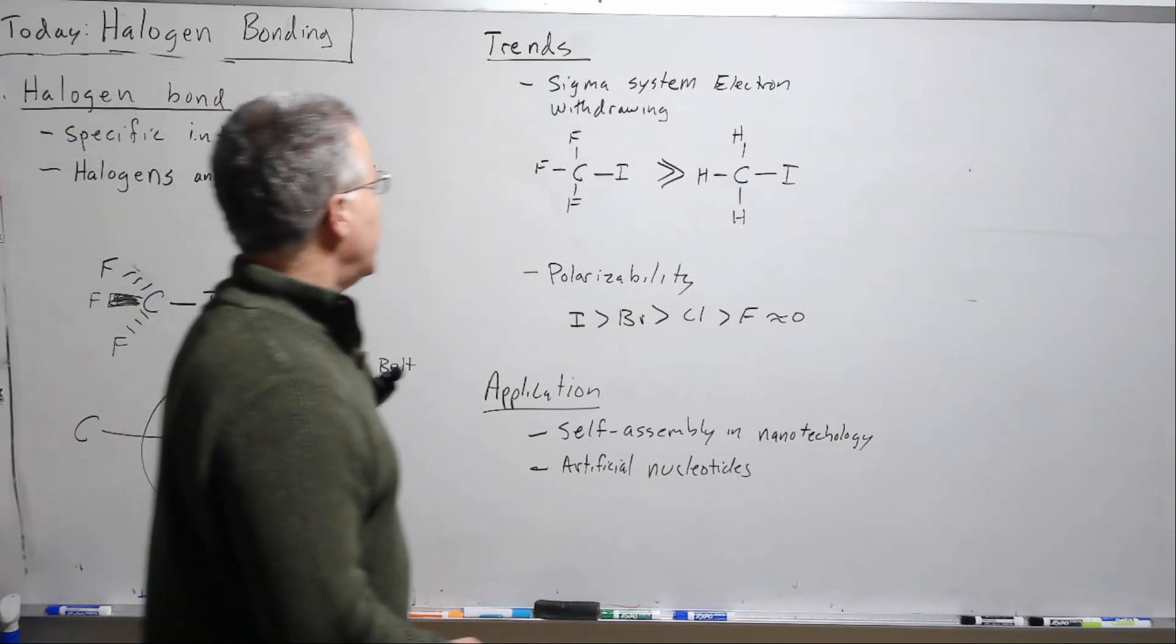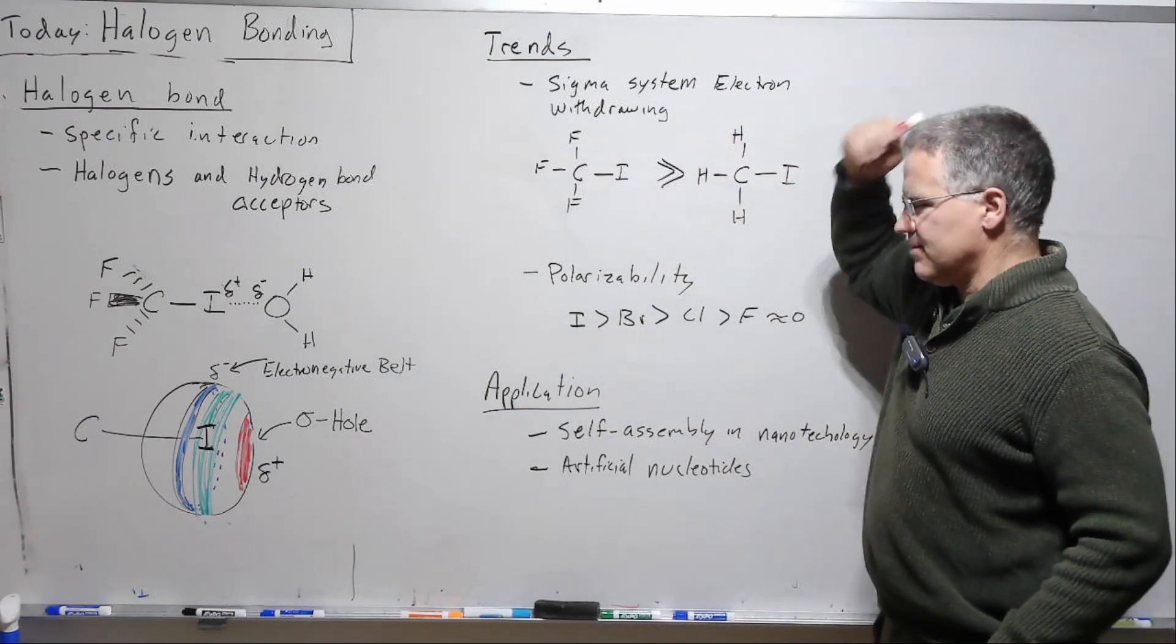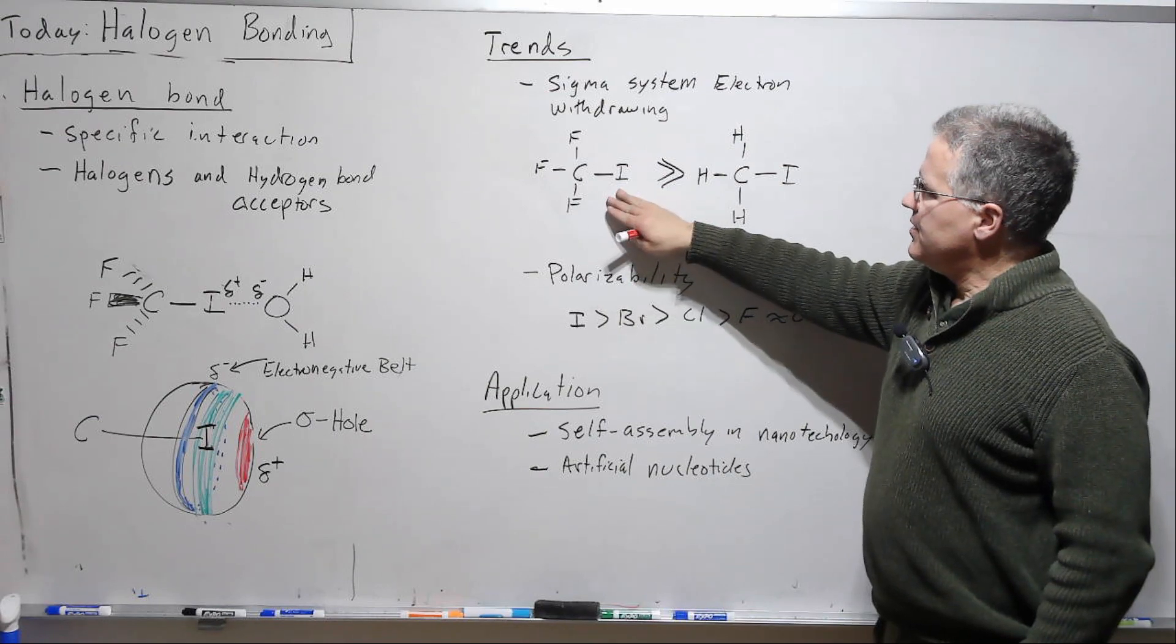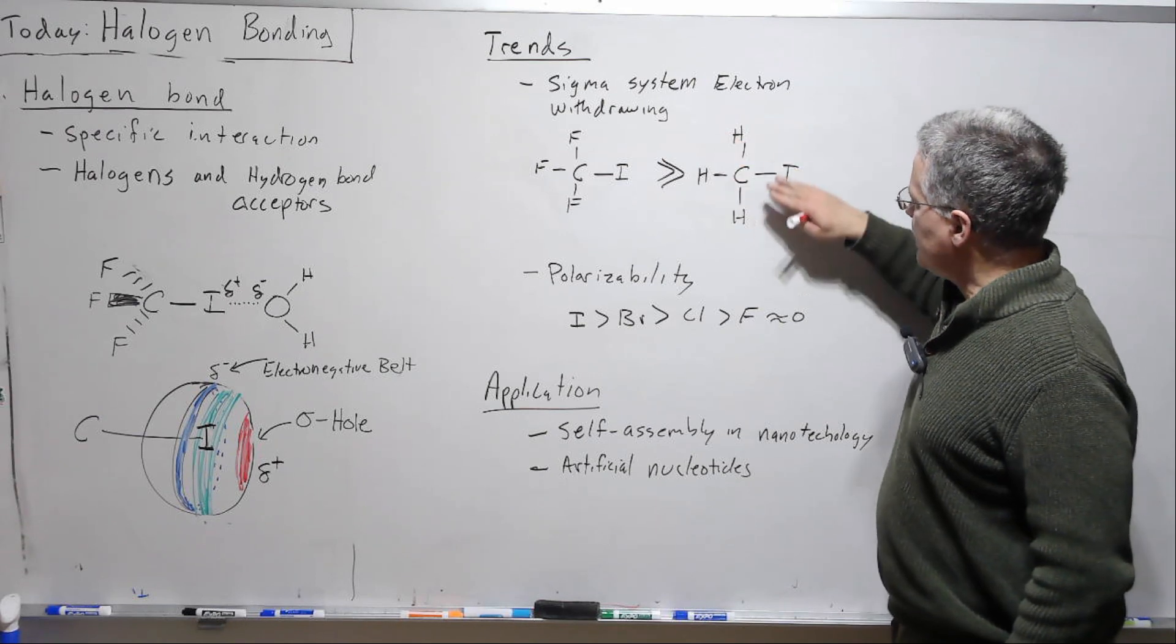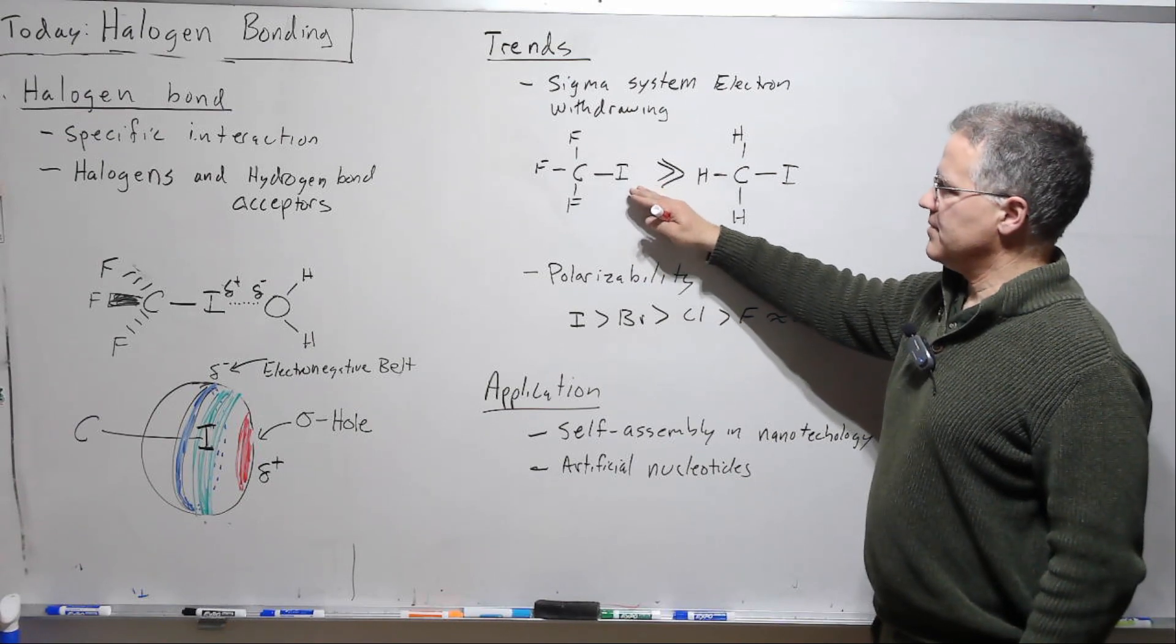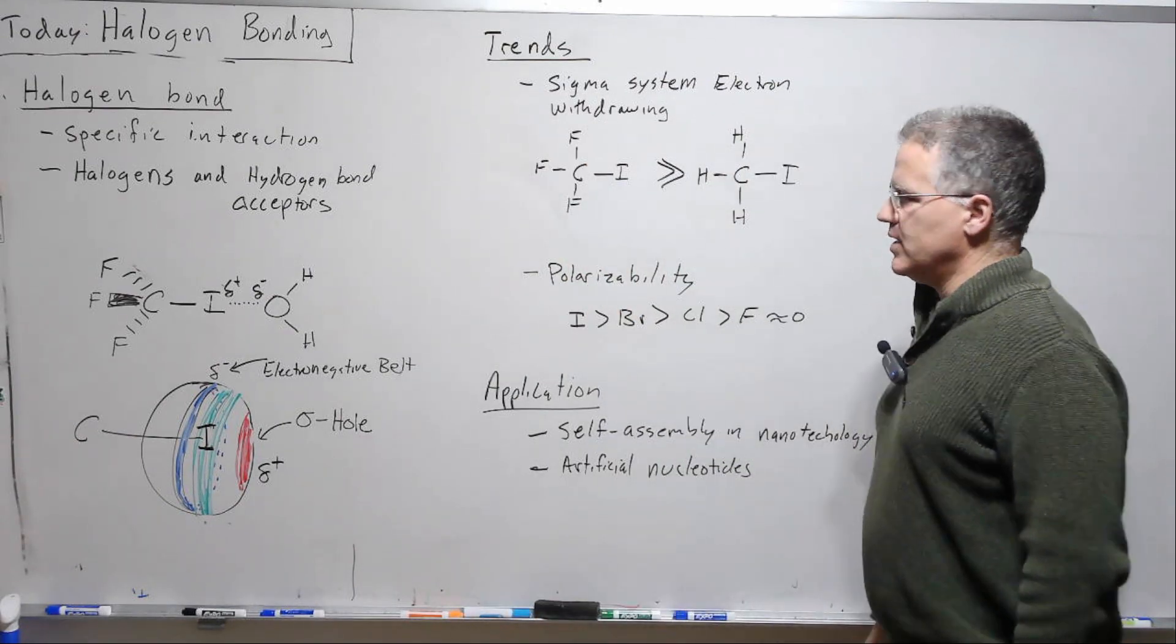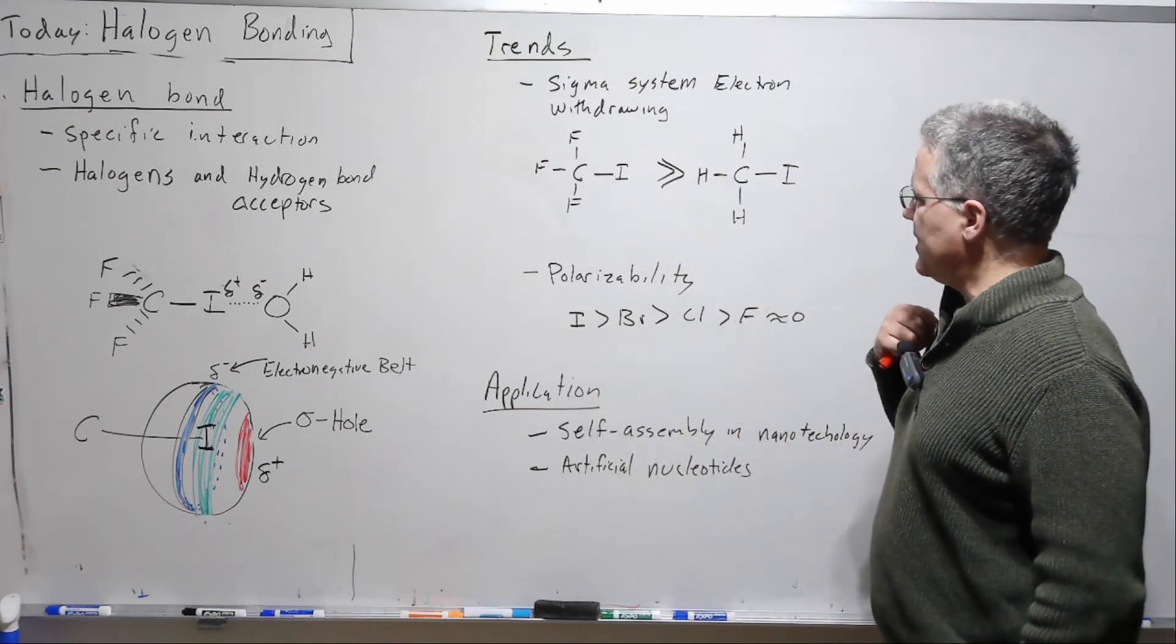So as we compare the size of the sigma hole or the strength of the sigma hole and hence the potential for a strong halogen bond, this compound with the fluorines, the much more electronegative fluorines than this compound with the much less electronegative hydrogens will have a much stronger sigma hole and have a much more energetically favorable halogen bond with say water or ammonia, any of the regular hydrogen bond acceptors.